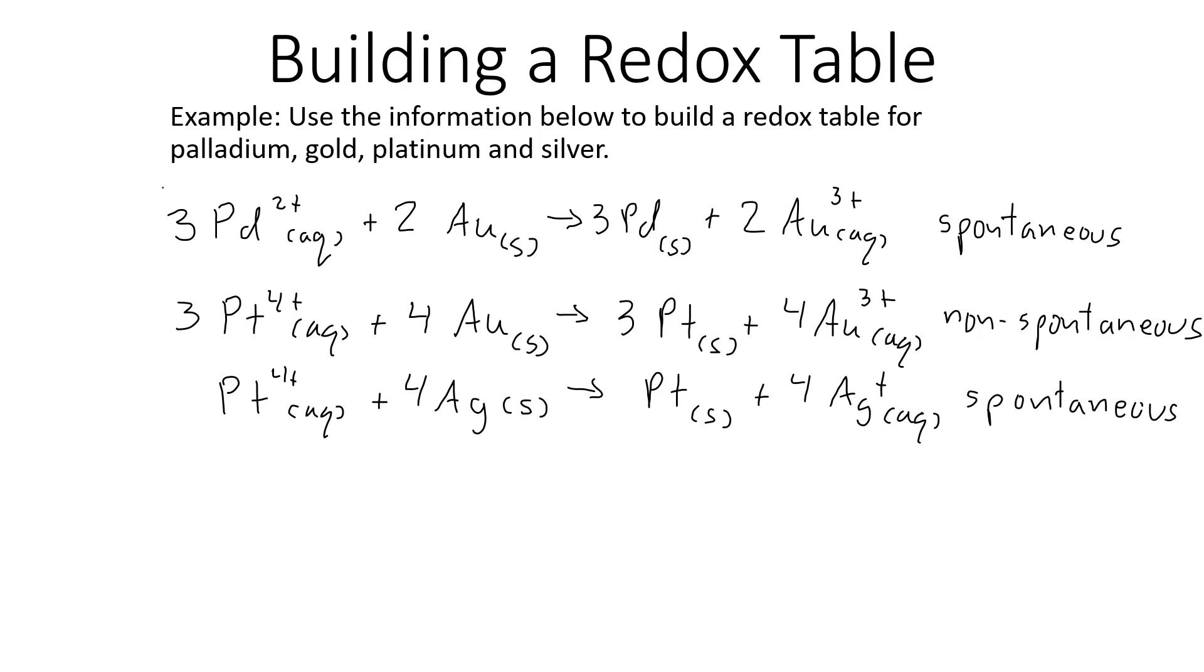Palladium, gold, platinum and silver. We've been putting together various combinations of their ions, which are oxidizing agents, and another metal, which are reducing agents. Some of the reactions happen on their own—they're spontaneous—and some, or one of them at least, is not spontaneous. It doesn't happen on its own, and we're supposed to use this to build a redox table.